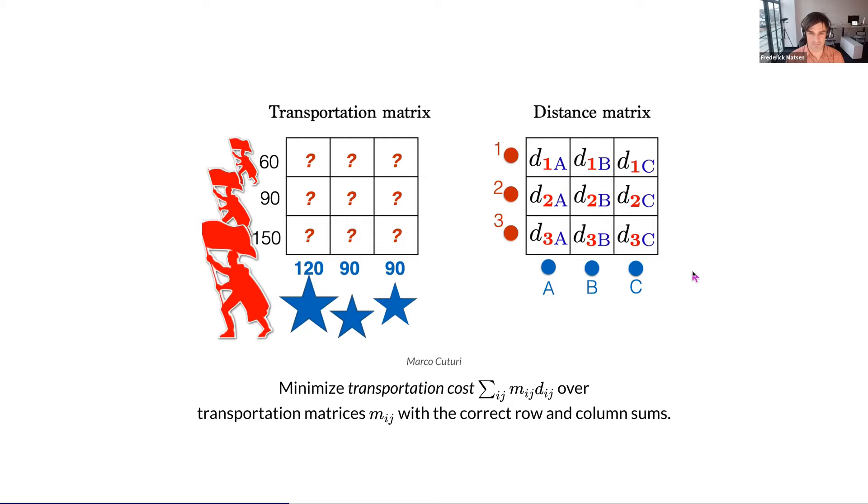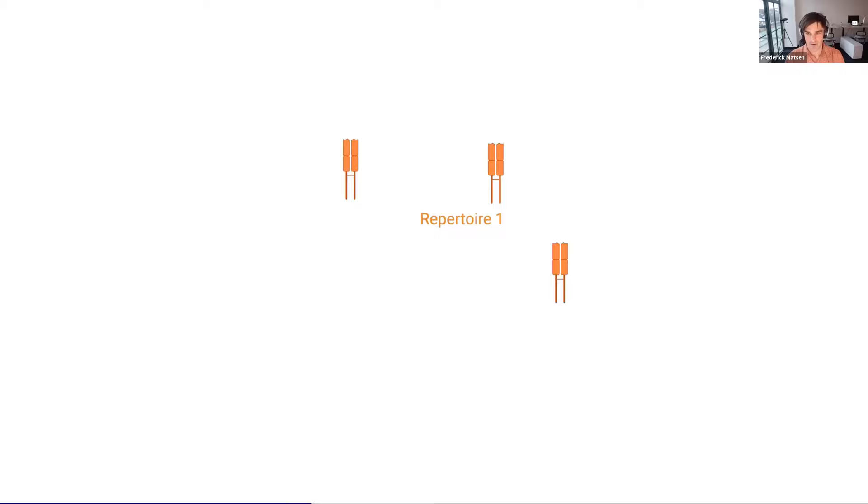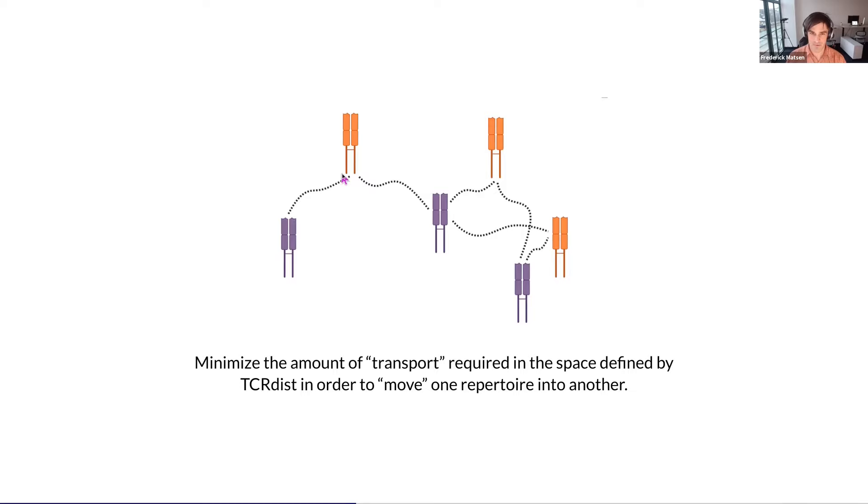Let's bring back TCRs. Instead of soldiers, we're thinking about T cell receptors. There are quantities that we have counts for each of these T cell receptors, and counts for each of the T cell receptors in the second repertoire. Because we're using TCR dist, we can compute distances between these different TCRs. Our goal now is to minimize the amount of transport required in this space defined by TCR dist in order to move one repertoire into another. This is a key point: this gives us a correspondence between sequences of different repertoires, even if none of those sequences are identical.